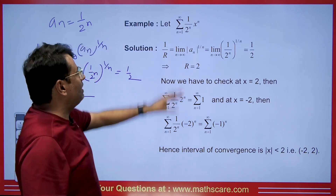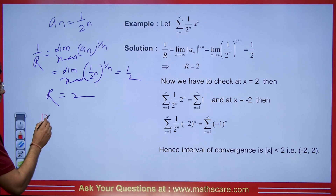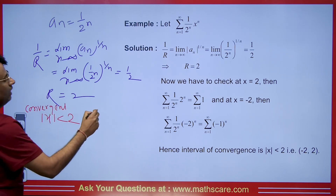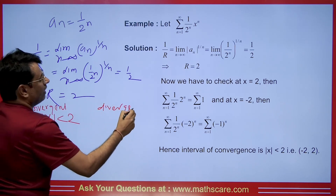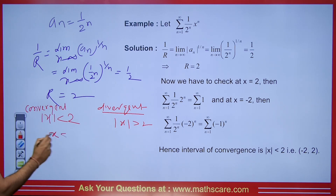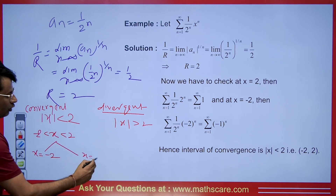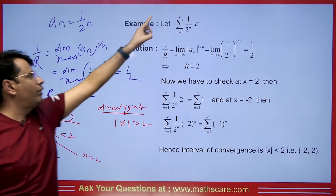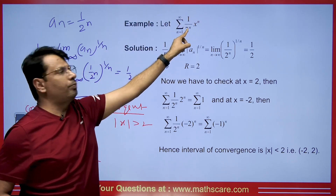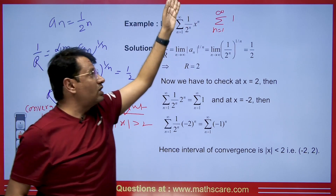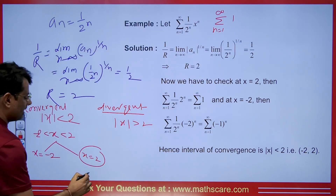The radius of convergence is 2, which means this series is convergent when |x| < 2, and divergent when |x| > 2. If we expand the interval, it goes from −2 to +2. But what if x = 2? We substitute: 2ⁿ/2ⁿ gives us a constant infinite series summing to 1 repeatedly — this is divergent.